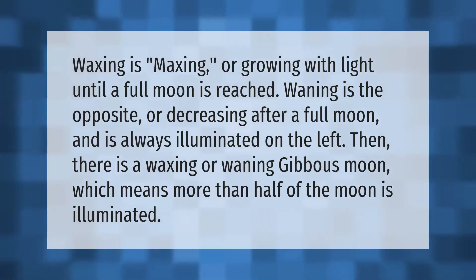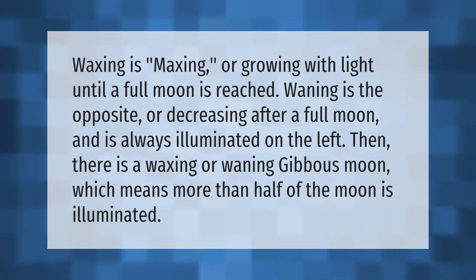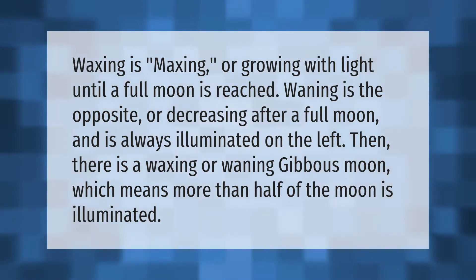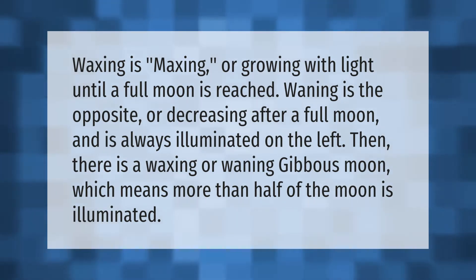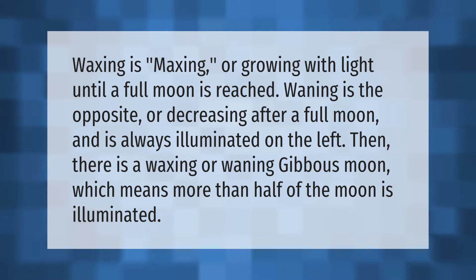Waxing is growing with light until a full moon is reached. Waning is the opposite, or decreasing after a full moon, and the moon is always illuminated on the left. There is also a waxing or waning gibbous moon, which means more than half of the moon is illuminated.